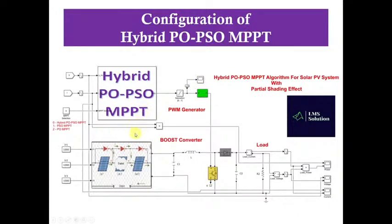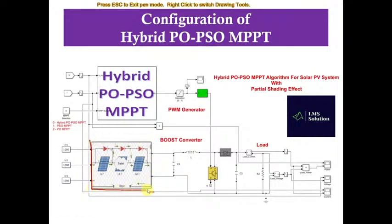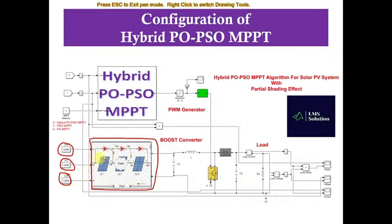This hybrid PO-PSO MPPT can be used for extracting the maximum power during partial shading condition as well as under normal irradiation condition. Here you can see that there are three solar panels connected in series to implement the partial shading effect. Each panel receives irradiation and we can change the irradiation for each panel in order to implement the partial shading effect. This panel is connected with a boost converter, which is going to be controlled by means of hybrid PO-PSO MPPT.